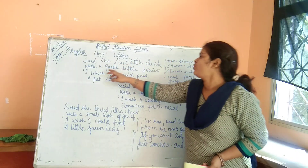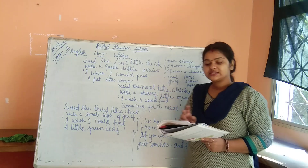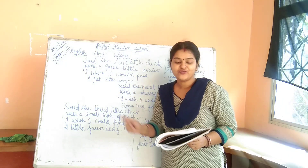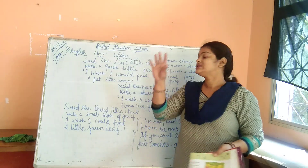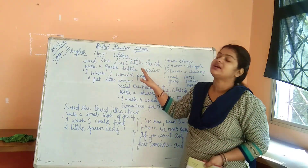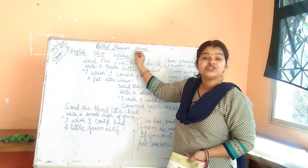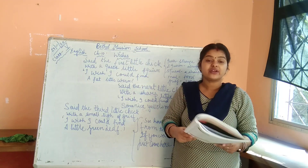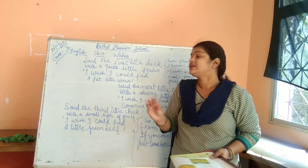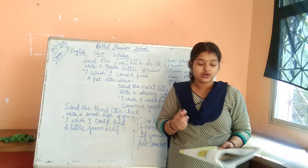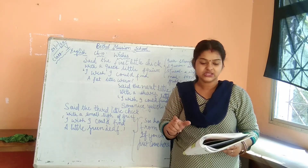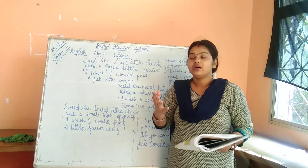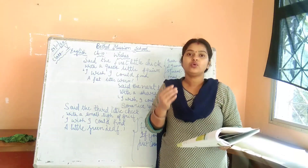Said the first little chick with a cool little squirm: 'I wish I could find a fat little worm.' So this means the first little chick has hope and wishes that she could find a fat worm. Chicks used to eat worms, so this first chick found a little worm and she is wishing that she could find a more fat worm.